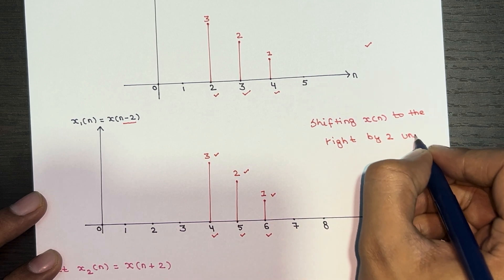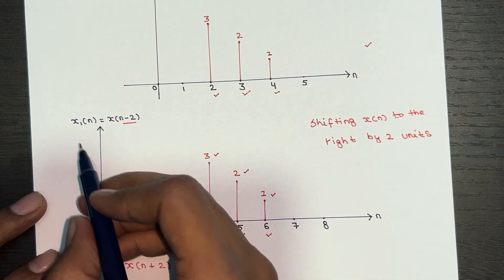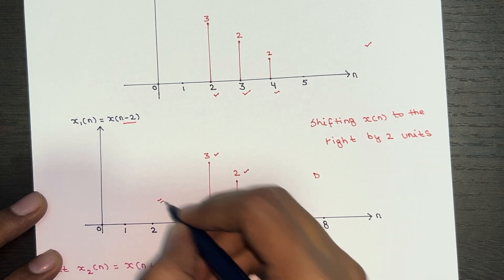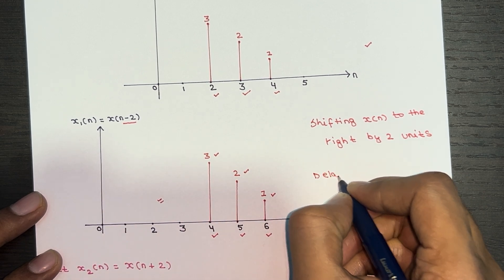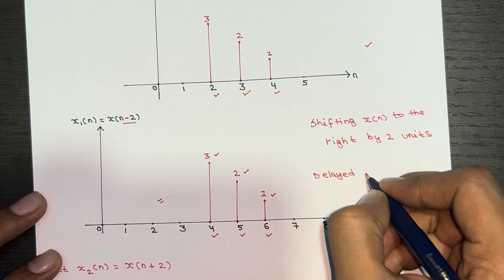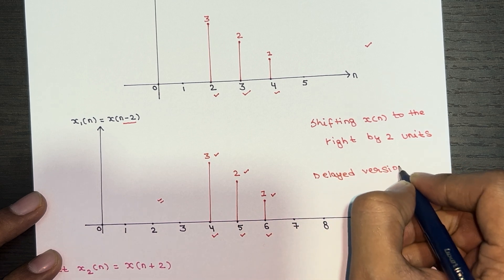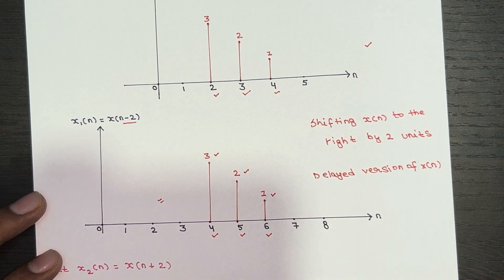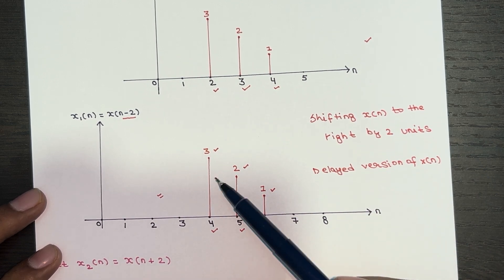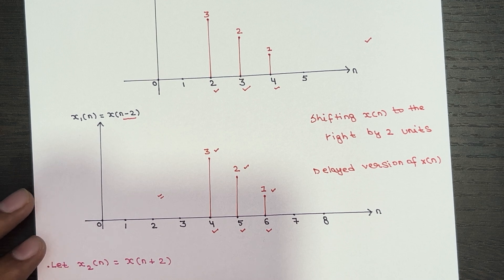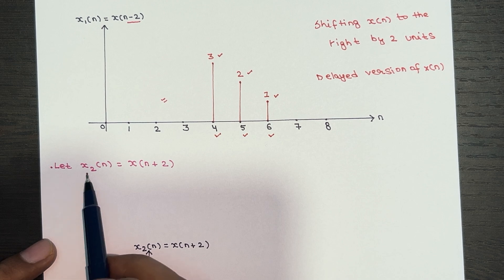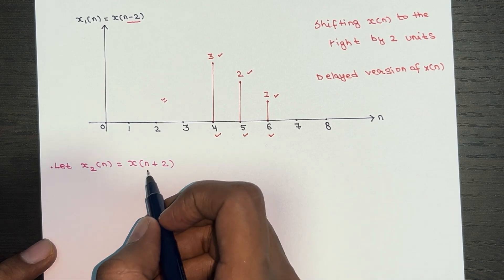So X1 of n is the delayed version of X of n. We call it delayed because we were expecting a value at n equals 2, but now we're getting that same value at n equals 4 — it is delayed. Now let's look at the next example: let X2 of n equal X of n plus 2.